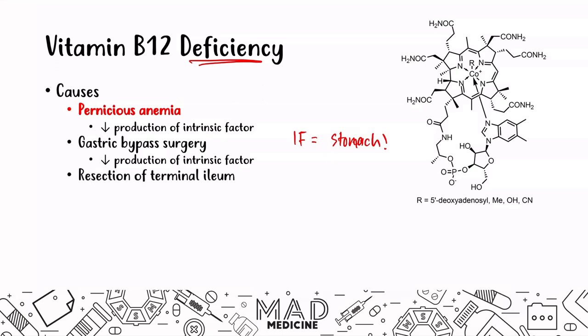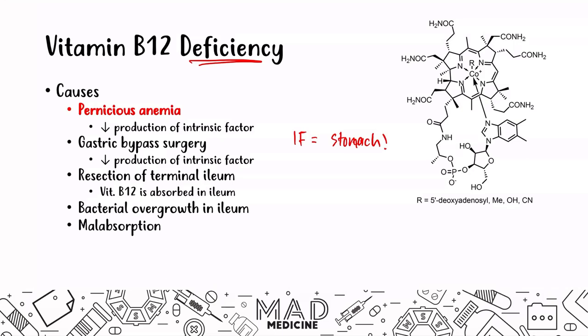Resection of the terminal ileum can also lead to vitamin B12 deficiency, since vitamin B12 is absorbed in the ileum — if you resect the terminal ileum, you get decreased absorption leading to deficiency. Bacterial overgrowth in the ileum can also cause this by blocking the transportation of vitamin B12, as can malabsorption. Finally, one high-yield item is the worm diphyllobothrium latum, which competes for vitamin B12 in the gut, leading to vitamin B12 deficiency.